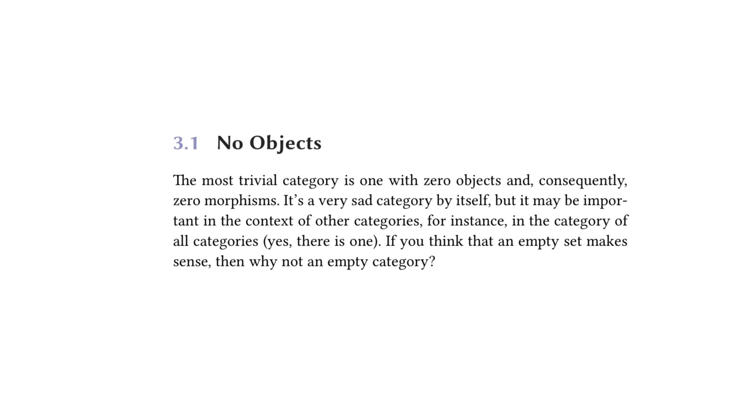So we'll read it, and it says, the most trivial category is one with zero objects, and consequently, zero morphisms. It's a very sad category by itself, but it may be important in the context of other categories. For instance, in the category of all categories, yes, there is one. If you think that an empty set makes sense, then why not an empty category? So I'm sure in later chapters, Bartosz is going to have more to say about this, but good to know that there is a category of no objects.